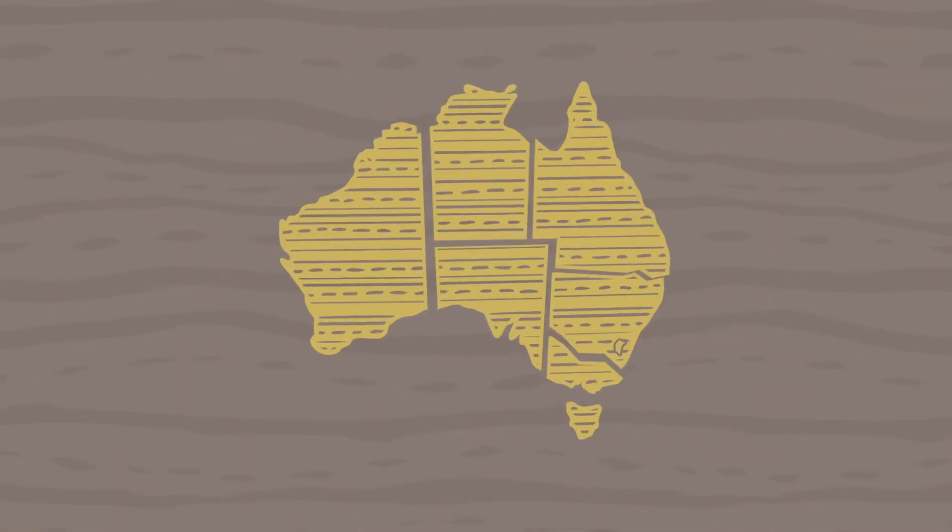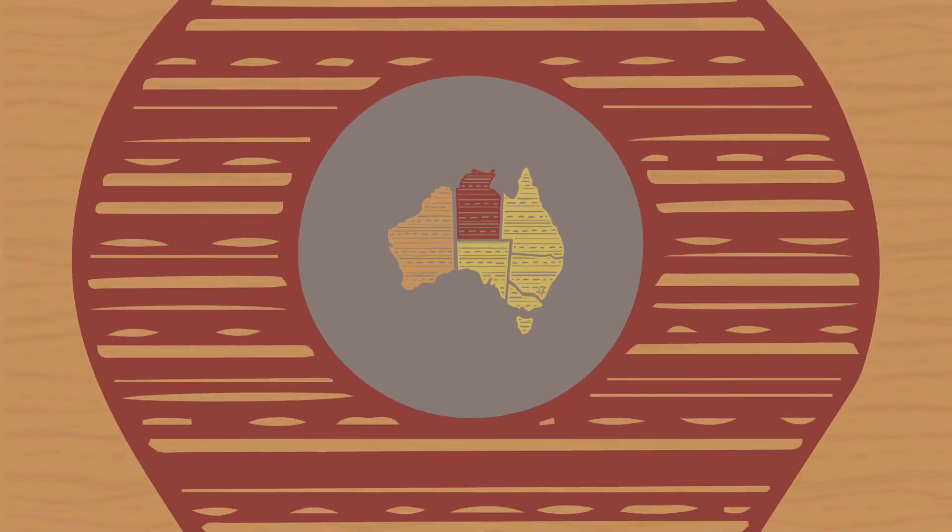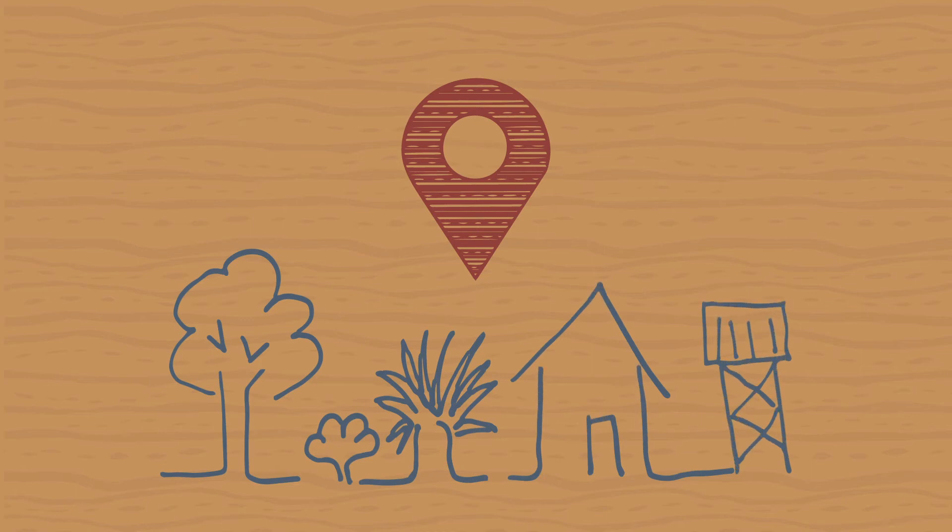It was found to be most common in the Northern Territory followed by Western Australia. Importantly, kidney disease is more common among Aboriginal and Torres Strait Islander people living in remote and very remote parts of Australia.